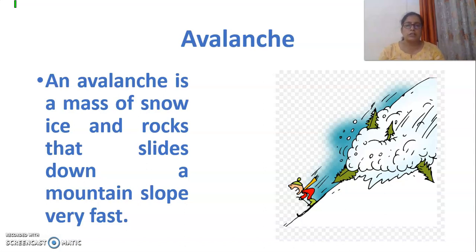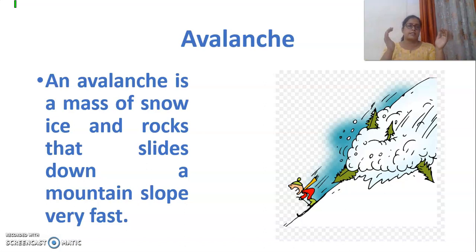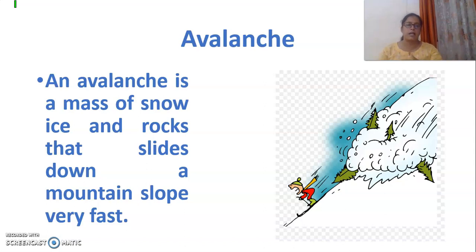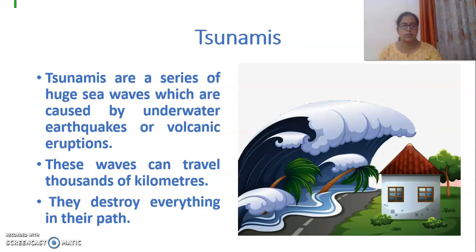Avalanche. An avalanche is a mass of snow — a lot of snow, ice, and rocks that slide down a mountain slope very fast. As you can see in the picture, a boy is running and the avalanche is coming with a lot of speed. This is what an avalanche is.